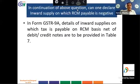Can one declare inward supply on which RCM payable is negative? In form GSTR 9A, details of inward supplies on which taxes are payable on RCM basis, net of debit and credit notes, are to be provided in Table 7.